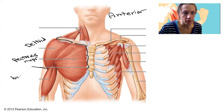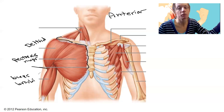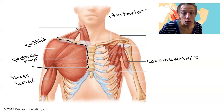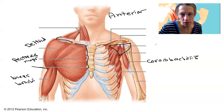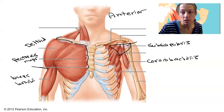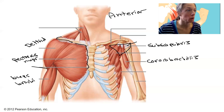On this side we have the biceps brachii. This is an anterior view, so biceps are in front — that's going to be flexion. Over on this side, you've got the coracobrachialis. Underneath is the subscapularis. Because this is the anterior view, that's how you know this is the subscapularis — it's underneath the scapula, and it's the only one that inserts onto the lesser tubercle of the humerus, originating on the subscapular fossa.